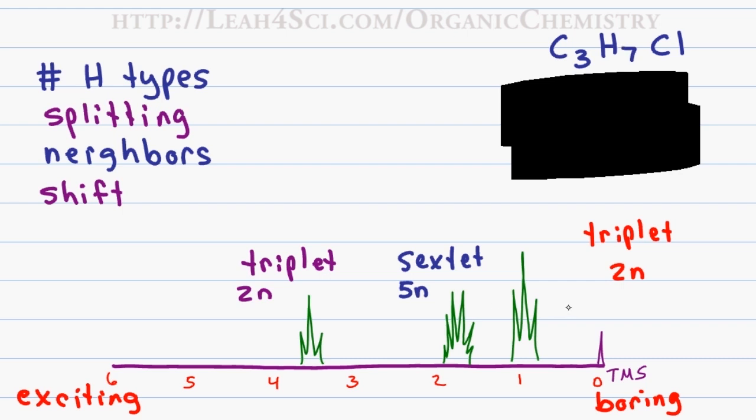If we look at each peak and determine how many neighbors it has, we can then reverse what we have to see which hydrogens belong where. If both triplets have two neighbors and the sextet has five neighbors, then we can assume that the middle peak is responsible for the two hydrogens which are neighboring both triplets.